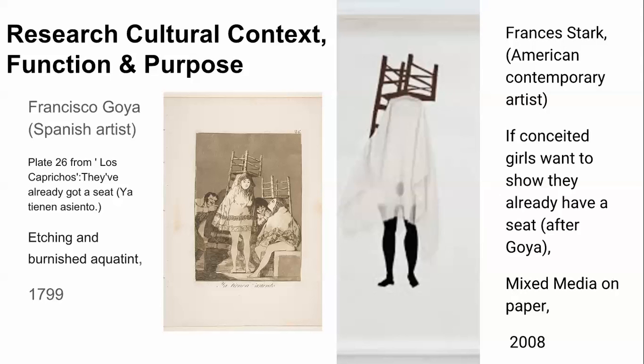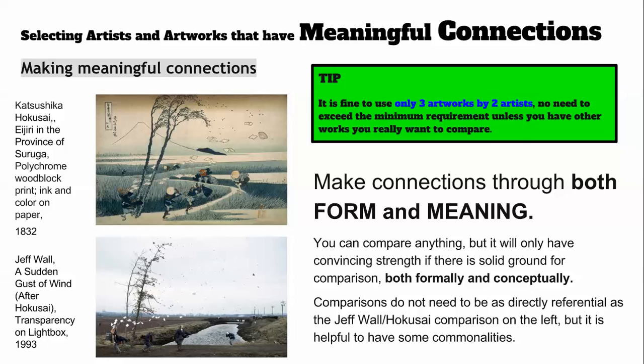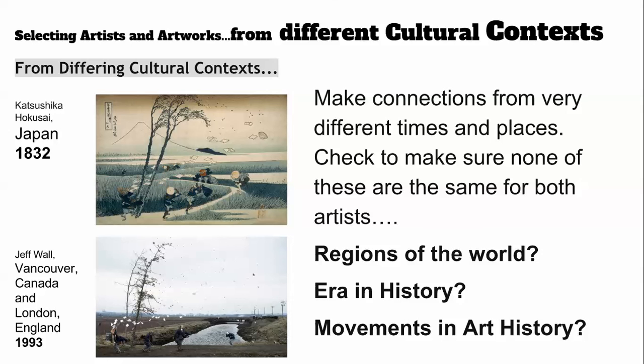Hokusai and Jeff Wall offer another strong pairing — Wall's work, a transparency on a light box photograph, is directly titled 'after Hokusai.' This pairing has both formal and conceptual comparisons: it visually resembles Hokusai's work and shares connected meaning. Hokusai is from Japan in 1832; Jeff Wall is from Vancouver, Canada, studied in London, and made his piece in 1993 — representing different regions, eras, and movements in art history.